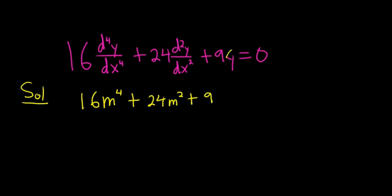If you want, you can think of this as being the zeroth derivative, so it's just m to the 0, which is 1, so you don't write it. This equals 0. This is called the characteristic or auxiliary equation.